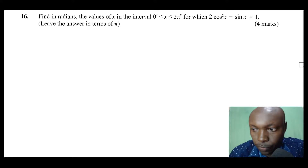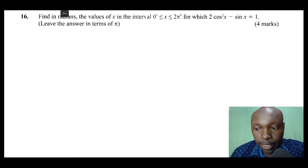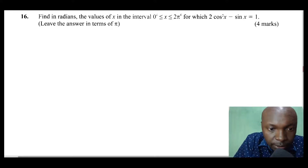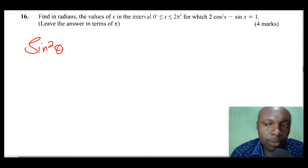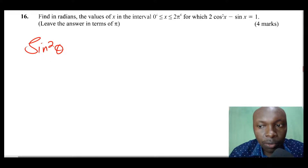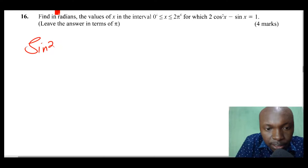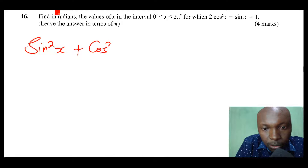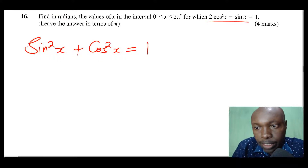To solve this question, there is a very important trigonometric identity that you need to know. The identity is: sin²x plus cos²x equals 1. This is the identity that is going to assist us to solve that.